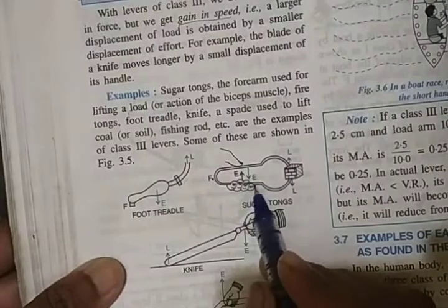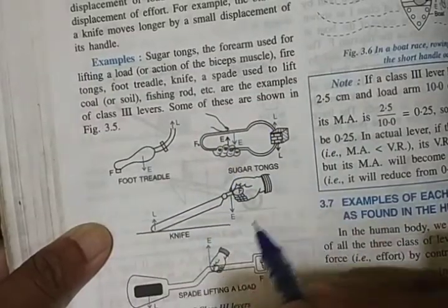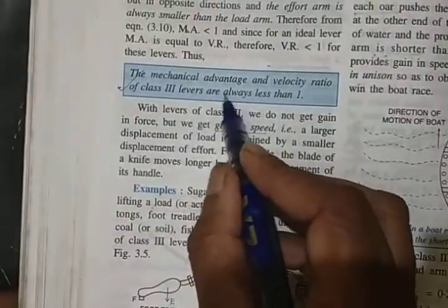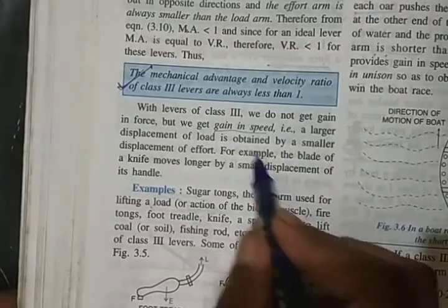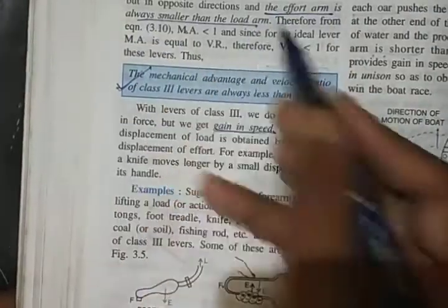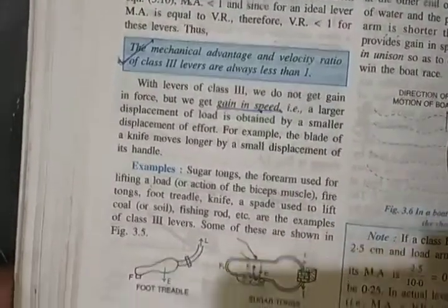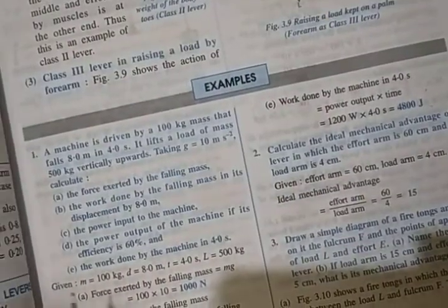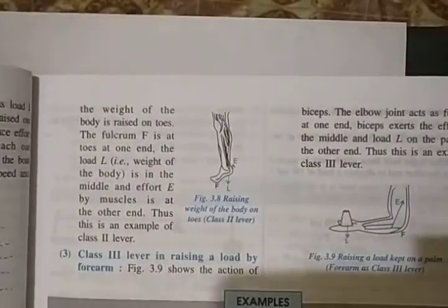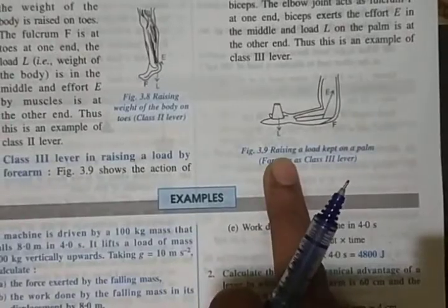In Class 3 levers, the fulcrum is at one end, effort is in the middle, and load is at the other end. The load arm is always greater than the effort arm, so MA and VR are always less than 1. It is used to obtain gain in speed. The examples of each class of lever as found in the human body are also important — those can also be asked in exams.